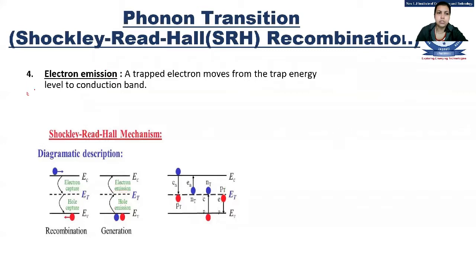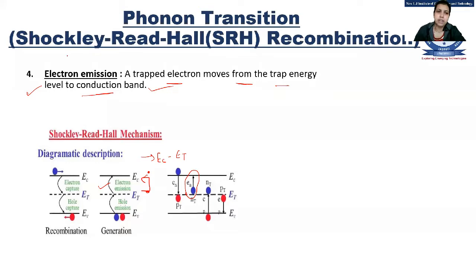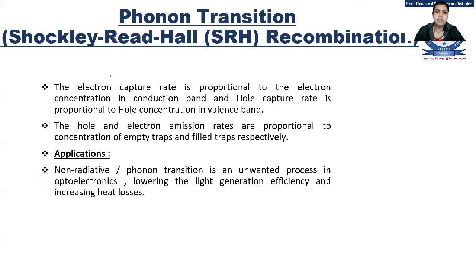In electron emission, a trapped electron moves from the trap energy level to the conduction band. The energy required is Ec minus Et, which the electron must gain to reach the conduction band. A simple trick to remember: whenever emission occurs, the electron moves upward; whenever capture occurs, the electron moves downward from higher to lower energy. These two figures illustrate the Shockley-Read-Hall mechanism.